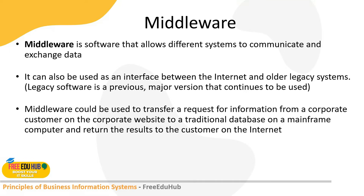Middleware is software that allows different systems to communicate and exchange data with each other. If systems are running different operating systems and applications — some on Linux, some on Windows — middleware helps them communicate using standard protocols so all applications can talk to each other. It can also be used as an interface between the internet and older or legacy software. Legacy software is the previous major version that continues to be used — any system for which no updates are released by the vendor.